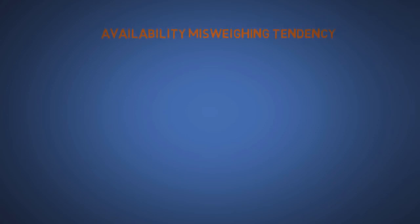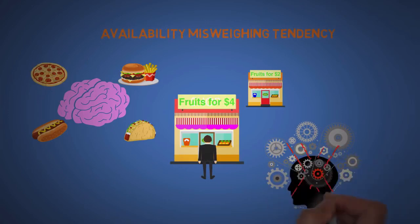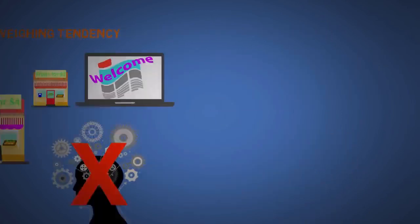The eighteenth is availability misweighing tendency. The mind works with what is easily available to it, like fast food. We might buy things that's available right in front of us even if there's something much cheaper somewhere else. This is why we have instincts, so the mind doesn't have to work as hard figuring stuff out. So if you've got a confusing website or advertisement, then good luck.